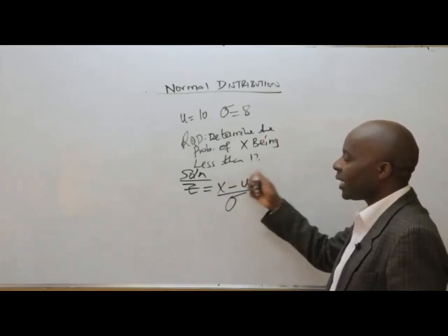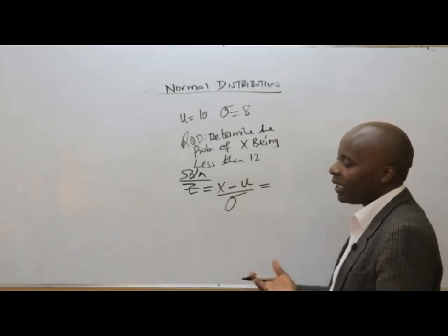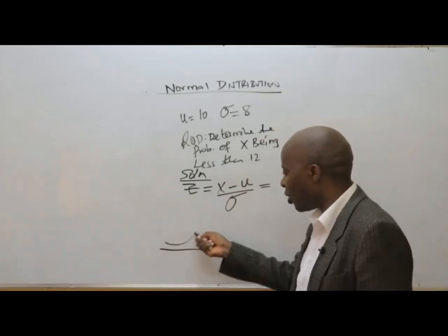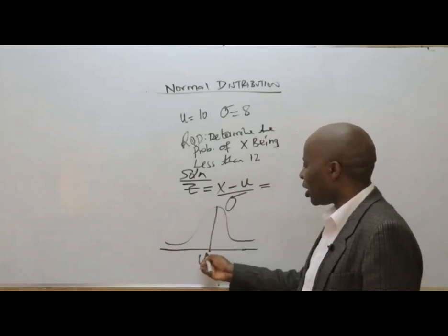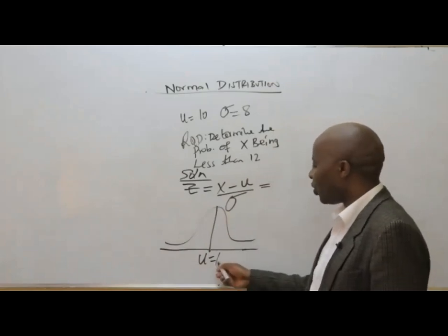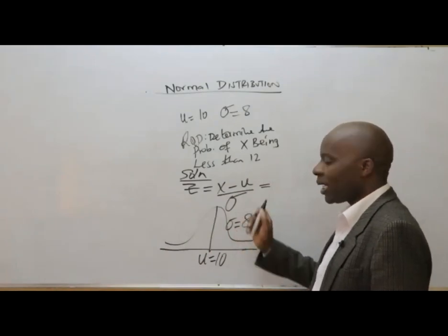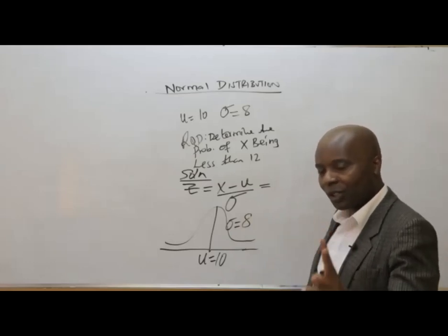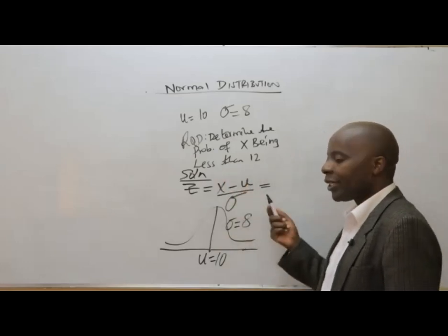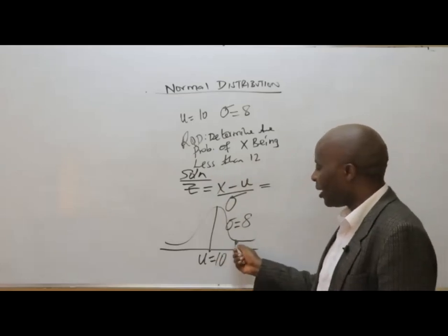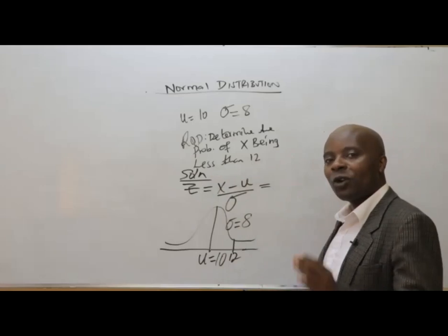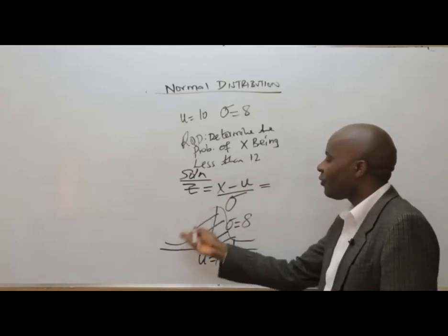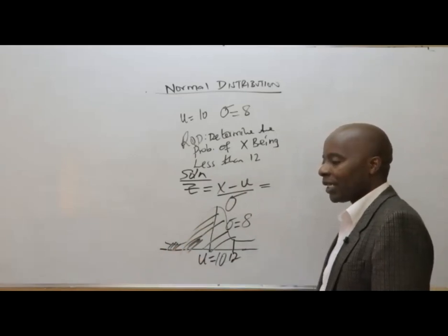They are talking of less than 12. If you are a beginner, it will be very important for you to draw the normal distribution to guide you. Our normal distribution is fully defined by two parameters: the mean, which is 10, and the standard deviation, which is 8. They are talking of less than 12, and since 12 is bigger than 10, 12 must be to the right of the mean. Less than 12 means we want the whole area on the left-hand side.